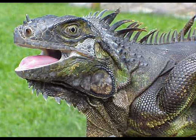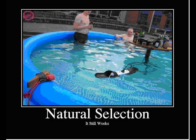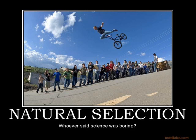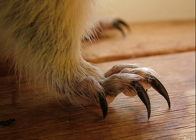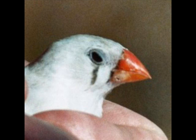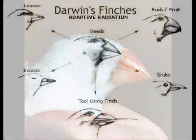One of the things Darwin observed was natural selection, which is the basis for evolution. Natural selection is a process by which individuals that have certain heritable characteristics survive and reproduce at a higher rate than other individuals. Over time, natural selection can increase the match between organisms and their environment — this is what Darwin saw in the Galapagos Islands.